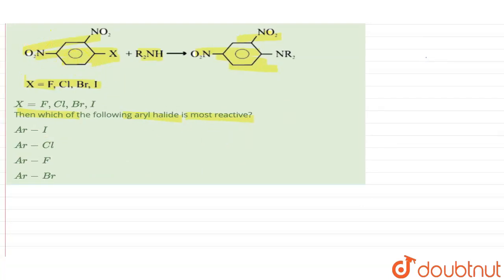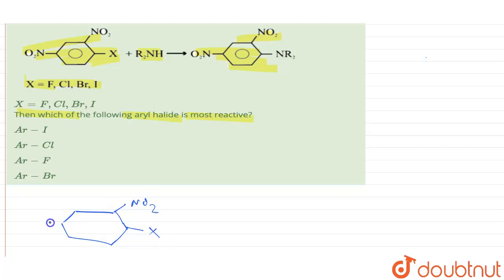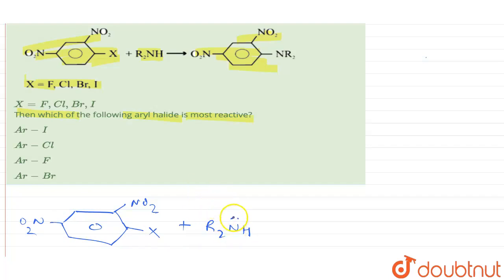The reaction happening here is: we have a benzene ring with an X group and an NR₂ group. This benzene molecule is being treated with R₂NH, a secondary amine, so nitrogen has a lone pair. This lone pair will attack on this position and facilitate the removal of the X group, which will be the leaving group.